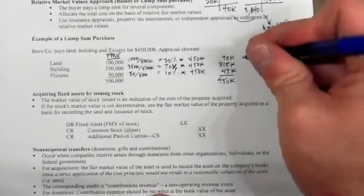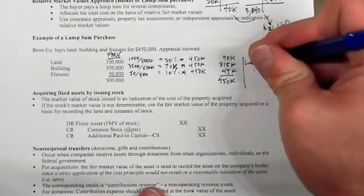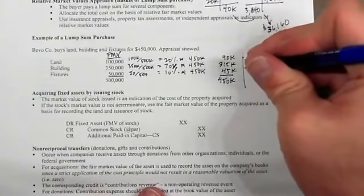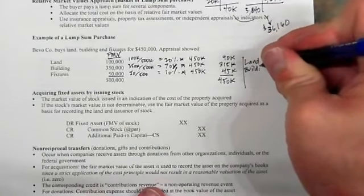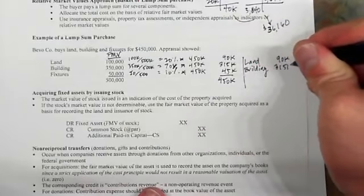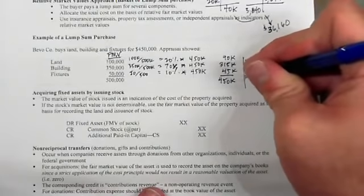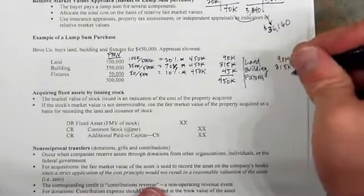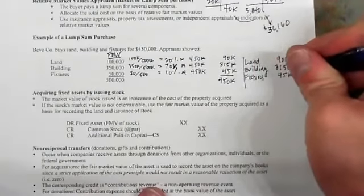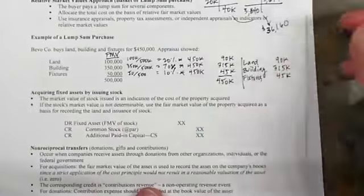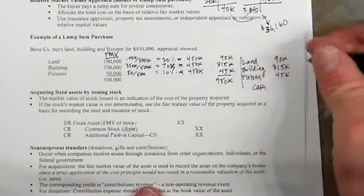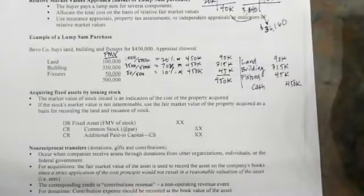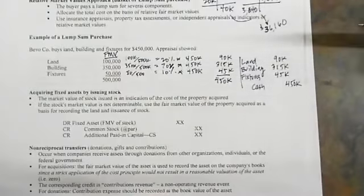Then you make the journal entry: record land at $90,000, the building at $315,000, and fixtures at $45,000. We gave up $450,000 in cash. And so that's a lump sum purchase.